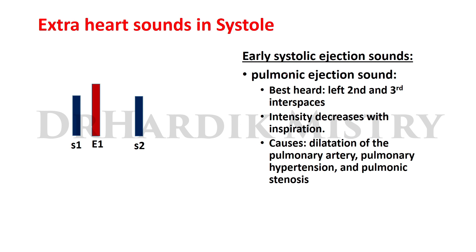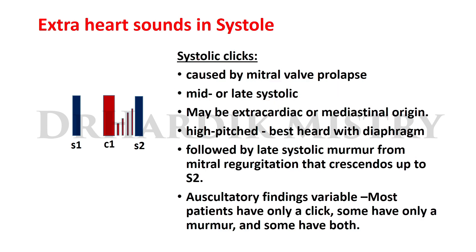The pulmonic ejection sound is best heard at the left second and third intercostal spaces. Its intensity decreases with inspiration, so it is affected by respiration. Causes include dilatation of the pulmonary artery, pulmonary hypertension, and pulmonic stenosis.